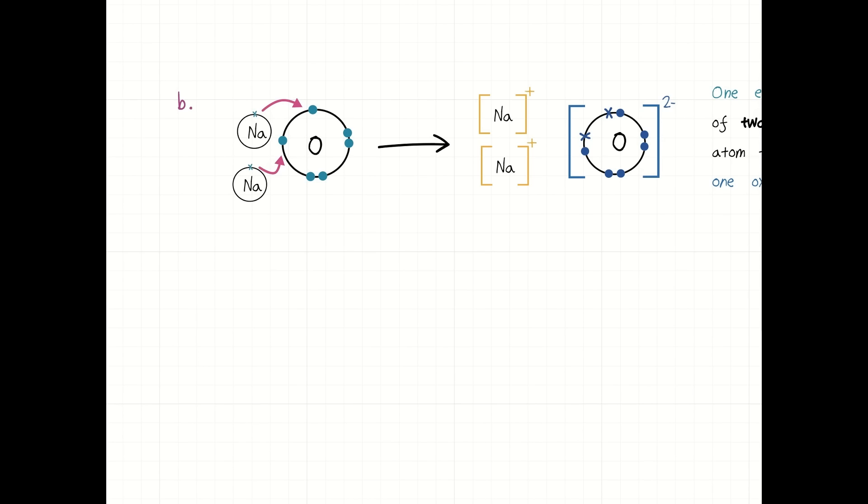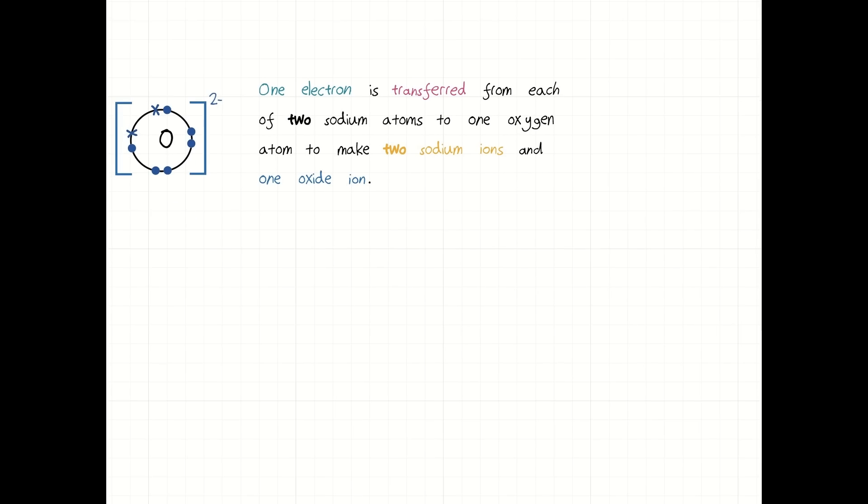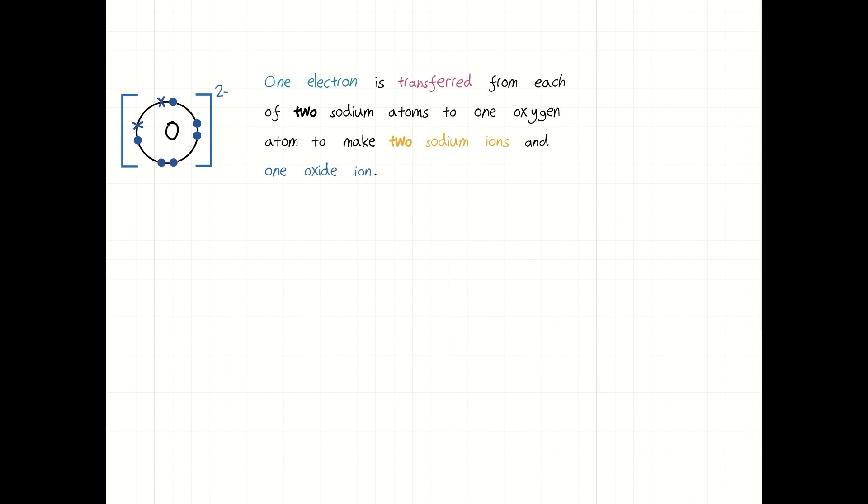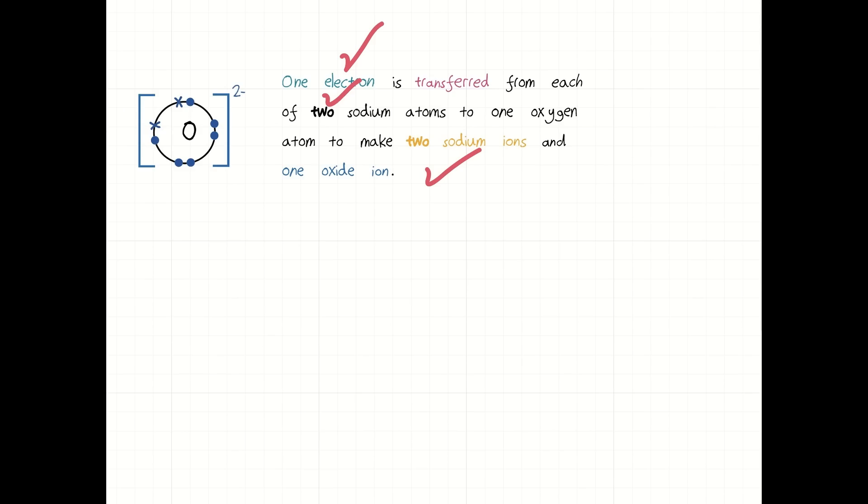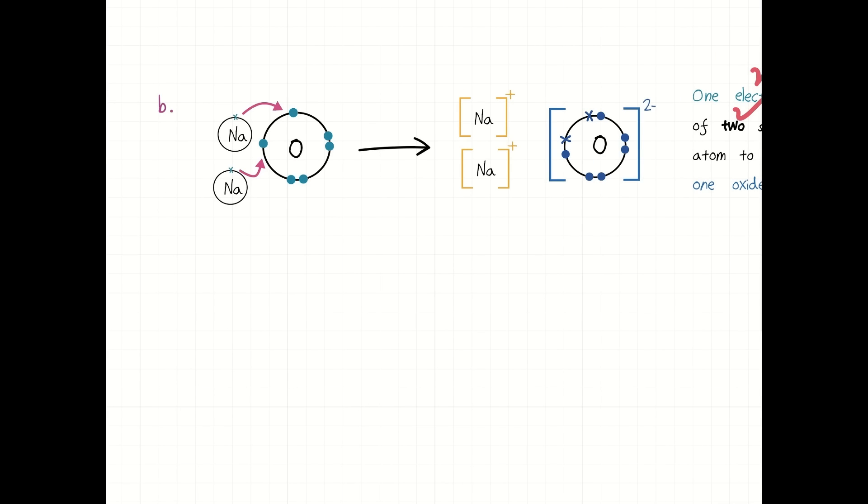And what you have are two sodium ions, like this, and one oxide ion. And again, if you want to get marks in the exam, you say one electron is transferred from each of two sodium atoms to one oxygen atom to make two sodium ions and one oxide ion. You effectively need to talk about the transfer of electrons, and I've represented that with arrows.